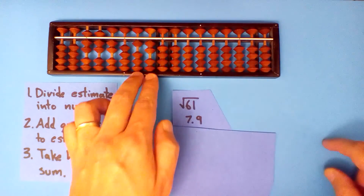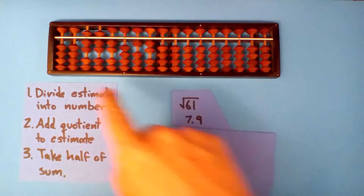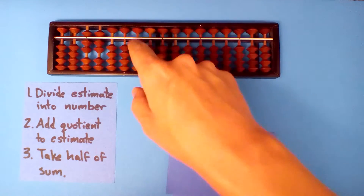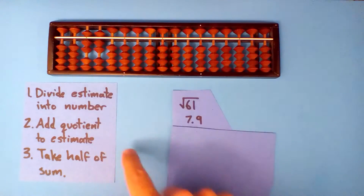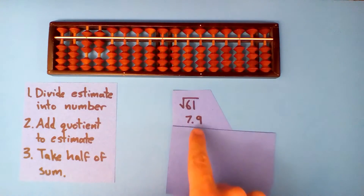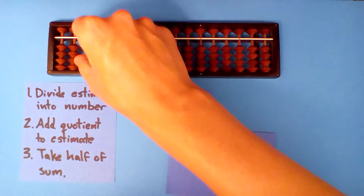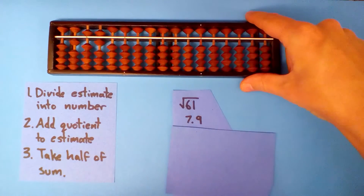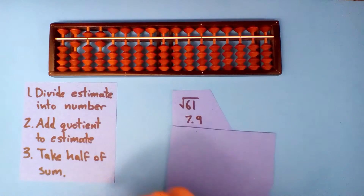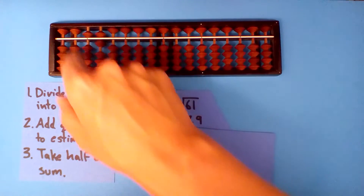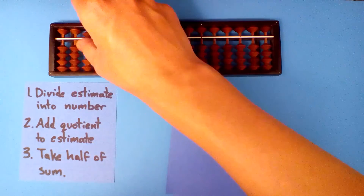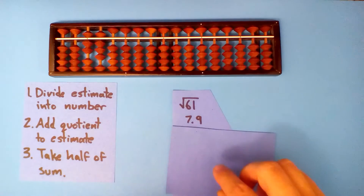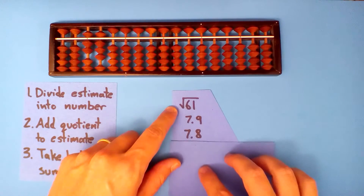I'm going to stop there. On my first try, I only want the first two decimals. So I'll round this down and take this as my quotient. The quotient plus the estimate gives 15.6, and we take half of that. Half of 15 is 7, half of 16 is 8. Now we have a better estimate: 7.8.